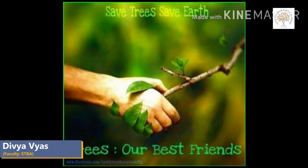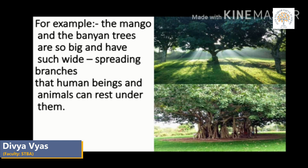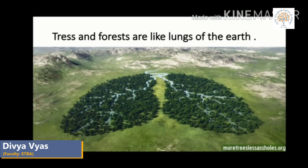In summer we take shelter in the shade of a tree. For example, the mango and banyan trees are so big and have such wide spreading branches that human beings and animals can rest under them. Trees and forests are like the lungs of the earth — they purify the air by taking in carbon dioxide and giving out oxygen.